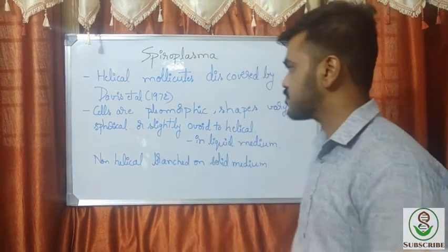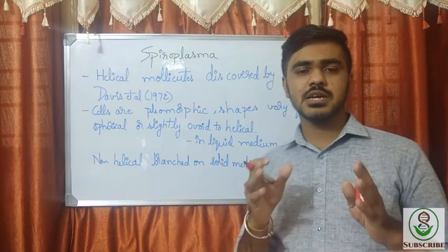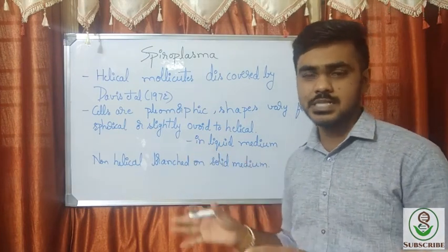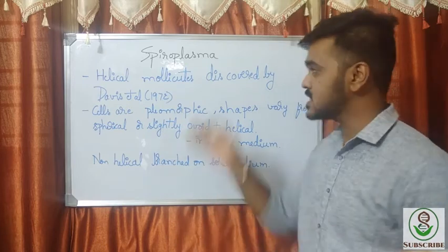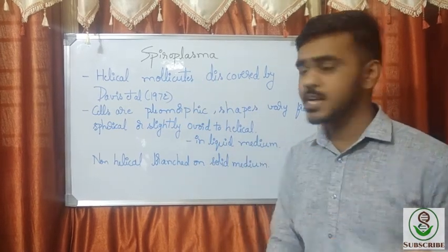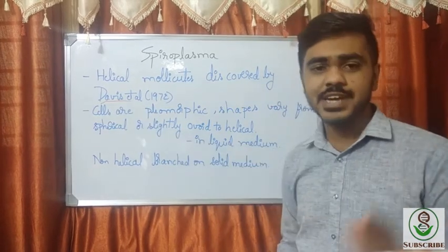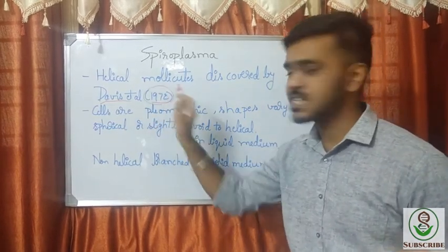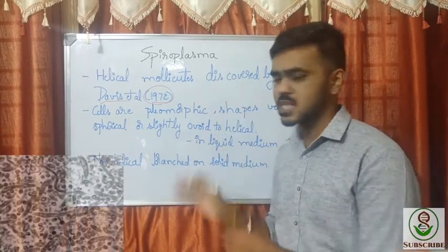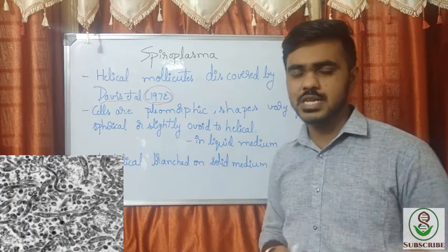Until 1967, spiroplasma diseases were thought to be caused by viruses. Later it was discovered that spiroplasma was identified and named by Davis et al. in the year 1972. The spiroplasma cells are pleomorphic — they have many morphological features.